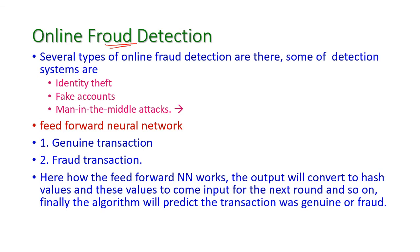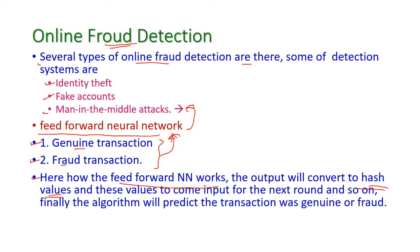The next application is online fraud detection. Several types of online fraud detection algorithms exist. Some detection systems handle identity theft, fake accounts, and man-in-the-middle attacks. The machine learning algorithm used here is the feed forward neural network, which identifies man-in-the-middle attacks and is used to identify genuine transactions versus fraudulent transactions. In this network, the output of the first round is converted to hash values, which then become the input of the next round, and this is done iteratively. Finally, the algorithm predicts whether the transaction was genuine or fraud.